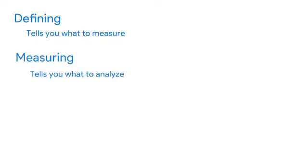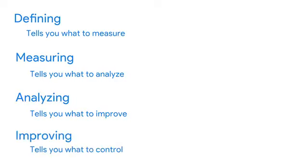To sum it all up, you can remember DMAIC like this: defining tells you what to measure, measuring tells you what to analyze, analyzing tells you what to improve, improving tells you what to control. Lean Six Sigma and the DMAIC approach are ideal when the project goal includes improving a current process to fix complex or high-risk problems, like improving sales conversions, or eliminating a bottleneck, which is when things get backed up during a process.